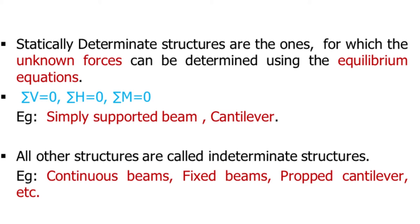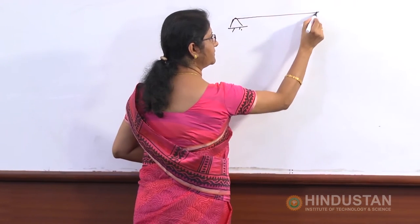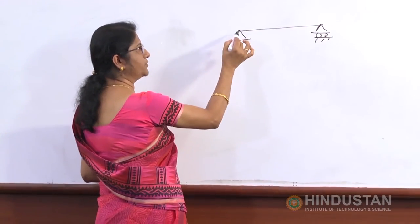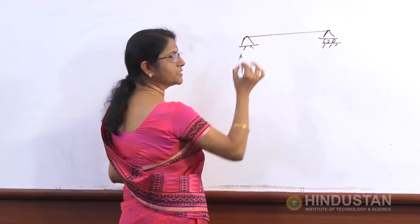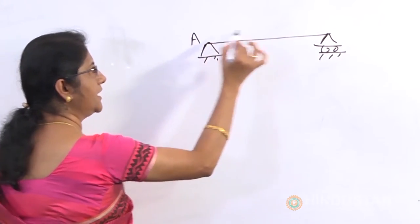The example of a determinate structure is a simply supported beam. I will draw and give you an example. The other type is the indeterminate structure — if you are unable to solve the unknowns using the equilibrium equations, we call that type an indeterminate structure. Let us take the case of a simply supported beam — a beam supported at one end with a hinged end and at the other end with a roller. If I designate it as AB, how many unknown forces are there?